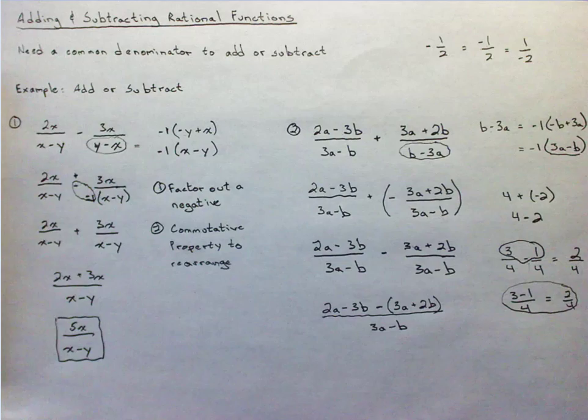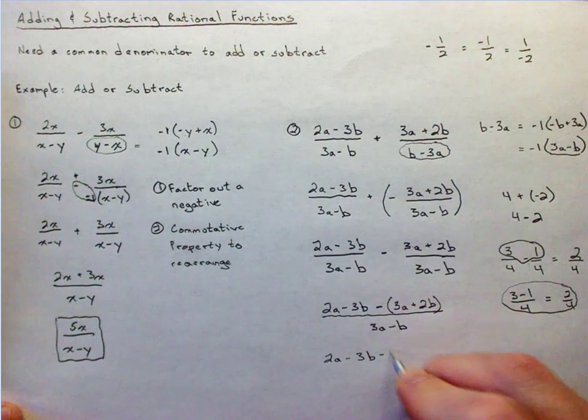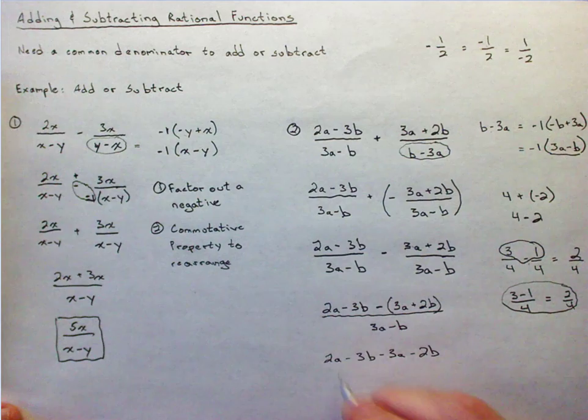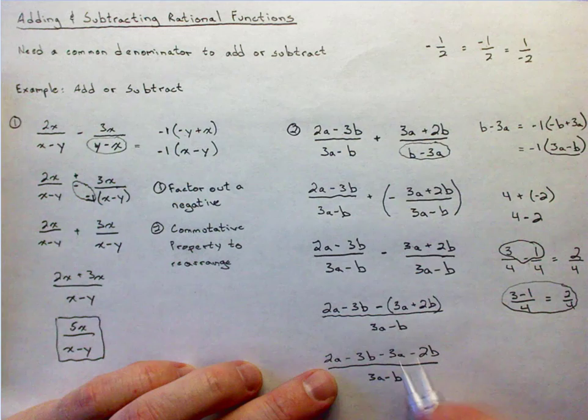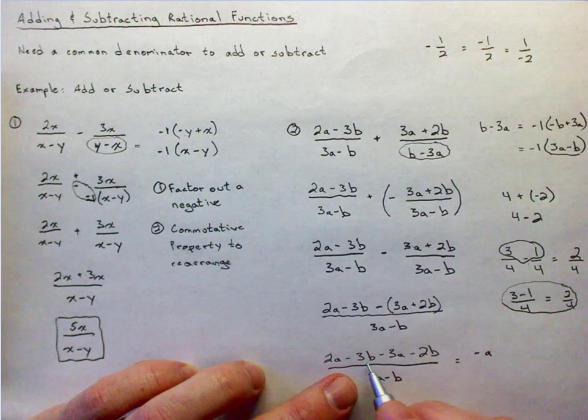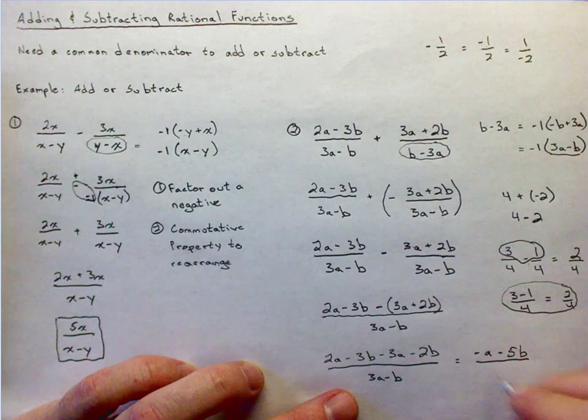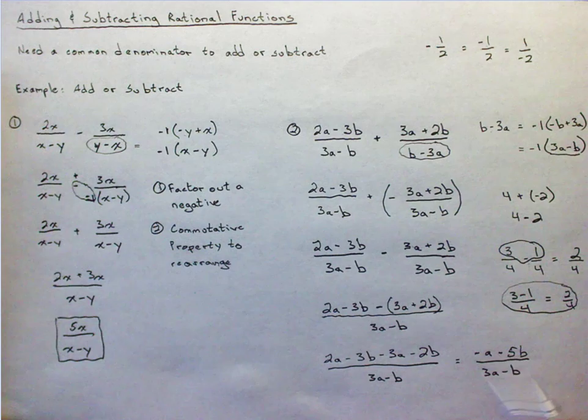Again, this is the only math that I have to do. I'm done with the denominator. 2a minus 3b minus 3a minus 2b over 3a minus b. Well, 2a minus 3a is negative a, and negative 3b minus 2b is negative 5b over 3a minus b. And there's nothing that I can factor out in these terms to simplify further. And that is my answer.